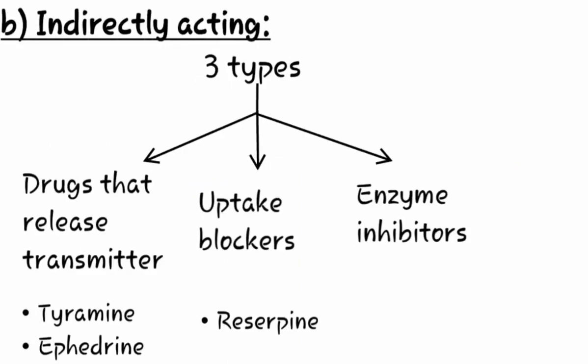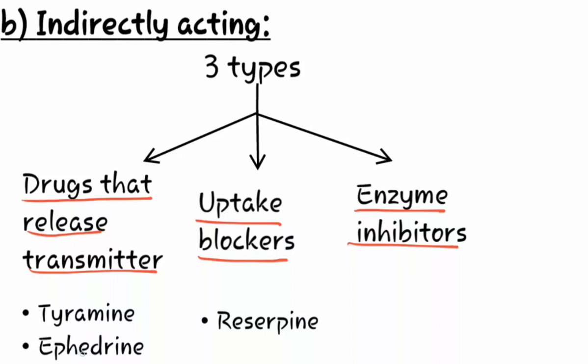Now let us see the classification of indirectly acting drugs. Indirectly acting drugs can be classified into three types: first is drugs that release the transmitter, second is uptake blockers, and third is enzyme inhibitors. Examples of drugs that release transmitter are tyramine and ephedrine. The example of uptake blockers is reserpine. Enzyme inhibitors can be classified into two types: first is monoamine oxidase enzyme inhibitors, and second is catechol-O-methyltransferase enzyme inhibitors.